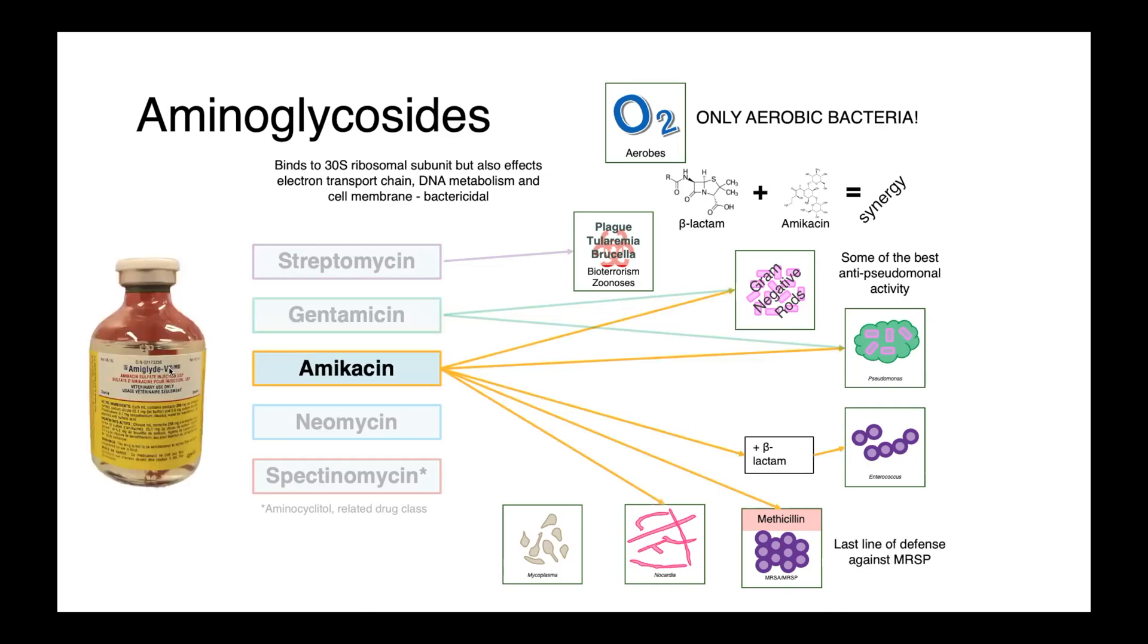Amikacin has a much broader spectrum of activity, great against pseudomonas, but also some very useful activity against gram-positives. In fact, in veterinary medicine, really companion animal medicine, amikacin is seen as one of our last lines of defense against methicillin-resistant Staphylococcus pseudintermedius, which is frequently multi-drug resistant and increasingly susceptible only to amikacin. Amikacin, when combined with a beta-lactam, is highly active against Enterococcus species, and we also see good activity of amikacin against Nocardia.